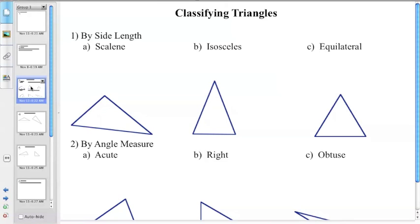The first is by side length. So basically these names will all be based on the sides of the triangles. For instance, scalene means that there are no congruent sides. So all three of these sides have different lengths.